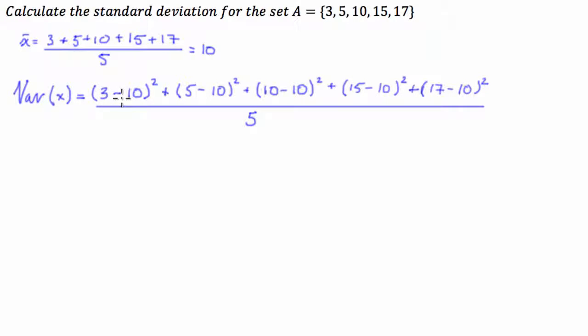So what we have here is, and what you'll notice when I was talking about what the squaring does, is you'll see that 3 minus 10 squared returns the same number as 17 minus 10 squared because this is negative 7 squared, which is 49, and this is positive 7 squared, which is 49.